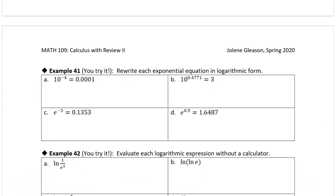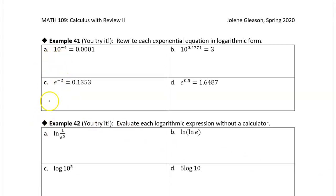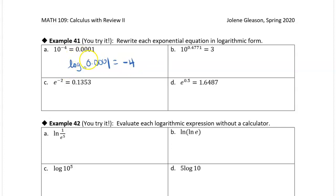Now let's rewrite exponents as logarithms. We have a base of 10, so we don't have to specify the base — just write 'log.' The log base 10 of 0.0001 equals negative 4; that's the same as 10 to the negative 4 equals 0.0001. And 10 to the 0.4771 equals 3, so log of 3 equals 0.4771. Remember, the log is the exponent — the result of a log is an exponent.